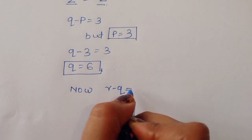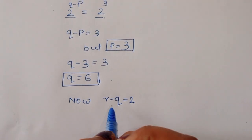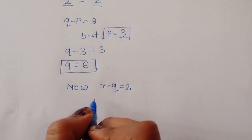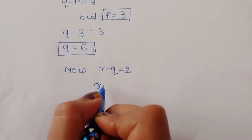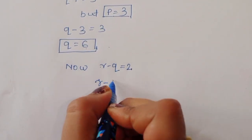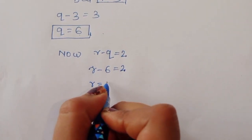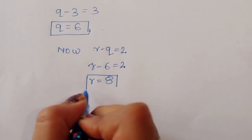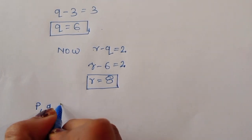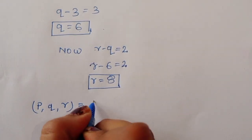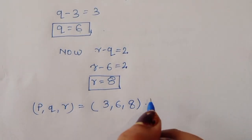R minus Q equals 2, and since Q equals 6, R equals 6 plus 2, which is 8. So the values are P equals 3, Q equals 6, and R equals 8.